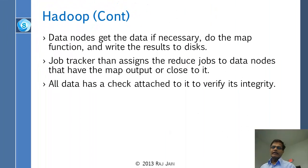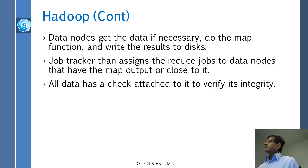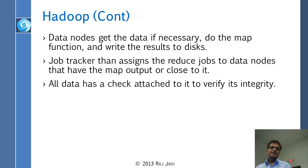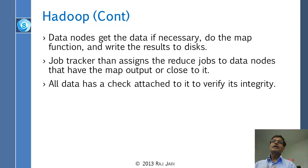The Data Node gets the data, performs the map function if necessary, and writes results to disk. The Job Tracker then assigns the reduce job to data nodes that have the data close to them. All data has a CRC checksum attached to it to verify integrity, so when you get a 64-kilobyte block you can be assured it is correct.